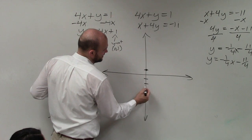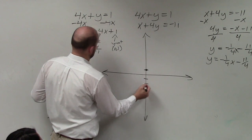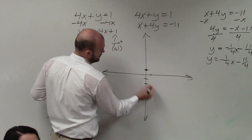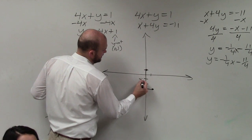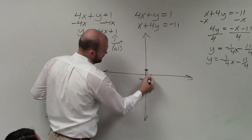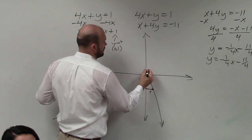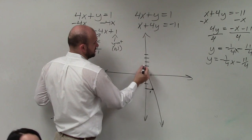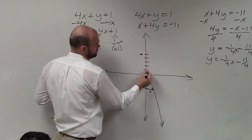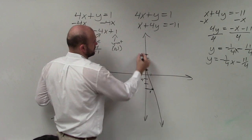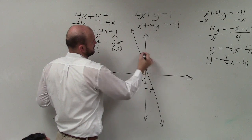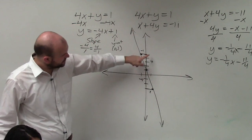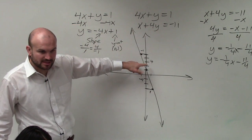Negative 4 over 1. Or you could also go up 4, 1, 2, 3, 4, to the left one. Does everybody see how either slope triangle is still going to give me the same slope? Brian, do you understand that?